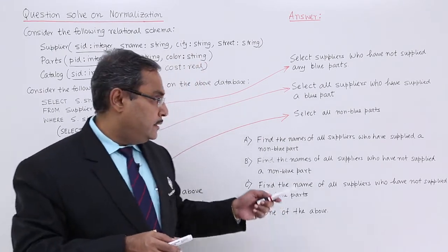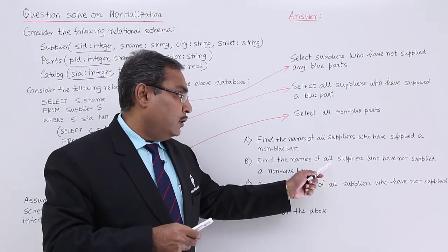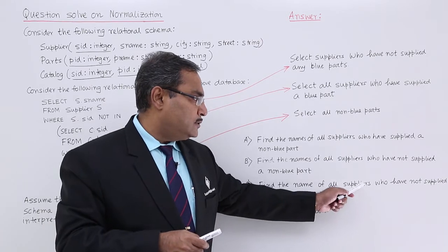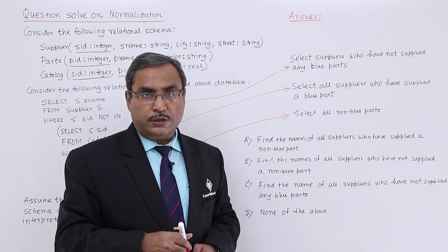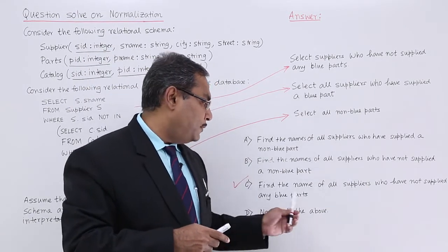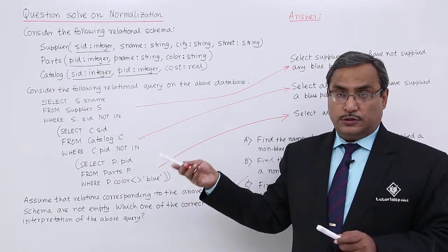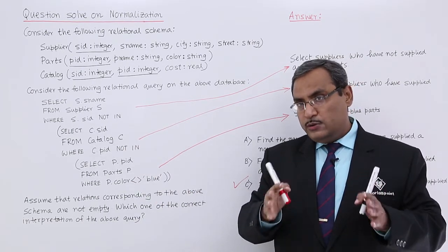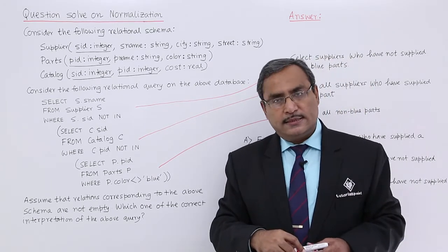Checking the options: Option A is 'Find names of all suppliers who have supplied a non-blue part.' Option B is 'Find names of all suppliers who have not supplied a non-blue part' — not correct. Option C is 'Find names of all suppliers who have not supplied any blue parts' — that is the correct answer. This question appeared in the GATE exam. Whenever such problems come, always evaluate from the innermost query outward. Thanks for watching.